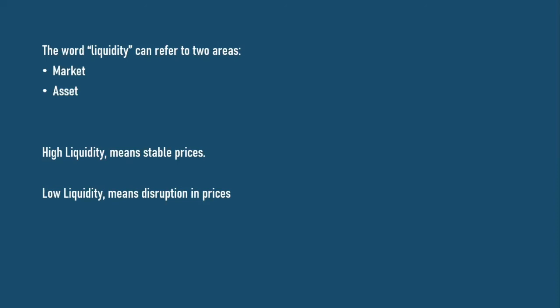High liquidity is associated with stable prices and low liquidity is associated with disruption in prices. This is especially true for forex traders. All currency pairs fall into one of three categories: major pairs, minor pairs, or exotic pairs. Major pairs are highly liquid, minor pairs are less liquid than major pairs but more liquid than exotic pairs, and exotic pairs are the least liquid.